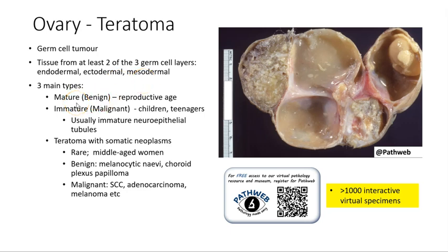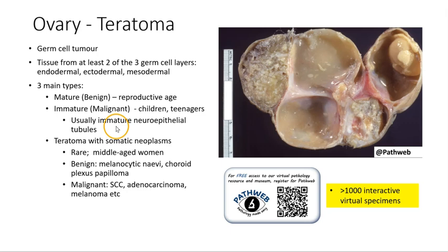There are three main types of teratomas. What we just saw is a mature teratoma, which is often cystic — hence it is also known as a mature cystic teratoma. This is benign and occurs in the reproductive age group. Then there is the immature or malignant teratoma, which tends to occur in a younger age group, including children and teenagers, and is defined by the presence of a significant amount of immature neuroepithelial tubules.